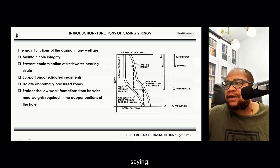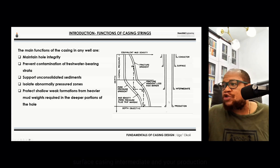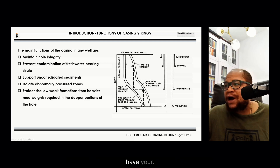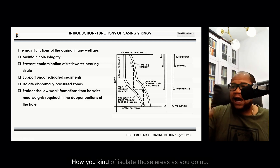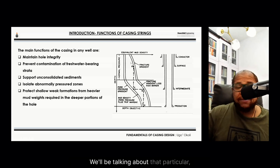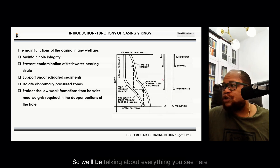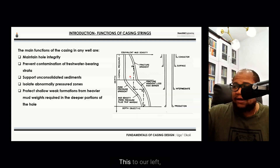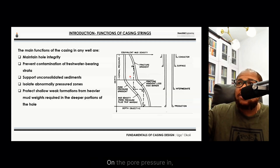In the schematic to the right you can see different casing types: conductor casing, surface casing, intermediate, and production casing. To the left you see how different sections are cased off, showing the kick margin, trip margin, fracture gradient, and pore pressures — illustrating how those areas are isolated based on the pore pressure regime. This will be discussed in detail in a subsequent module.